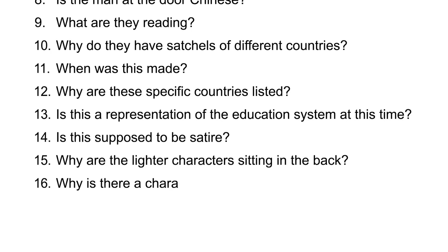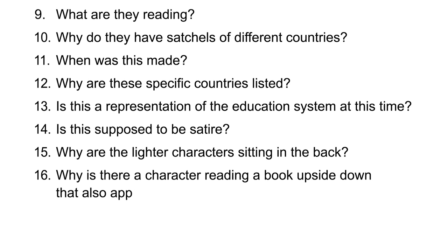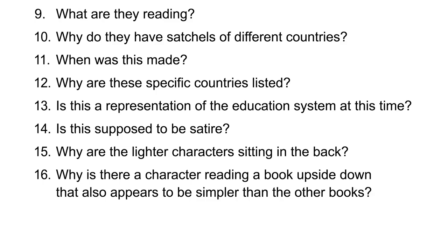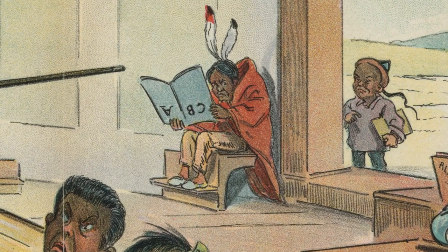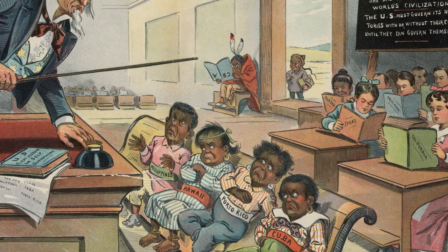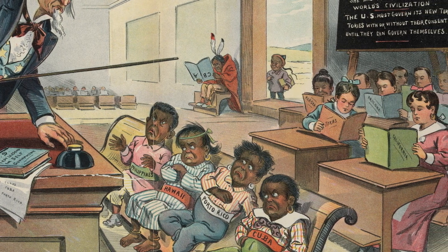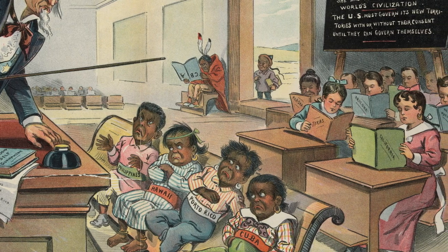Why is there a character reading a book upside down that also appears to be simpler than the other books? At first glance, I was kind of disgusted because I could see the different races and how they were depicted — I really didn't like it. But it really highlights the era of the time, the ideology and belief system that was going around. Doing the questions let us look deeper into this, deeper than our feelings, and have an actual scientific and analytical gaze upon it.